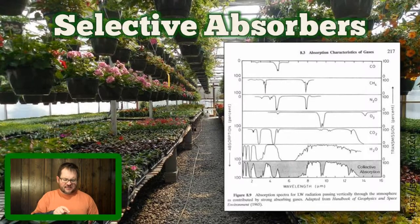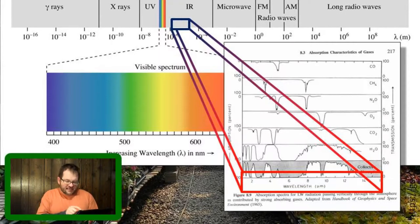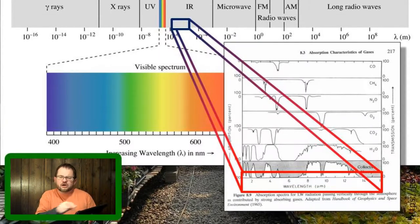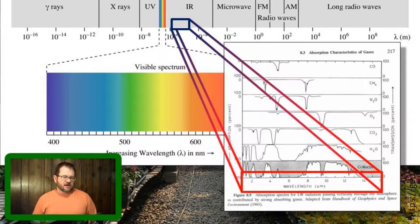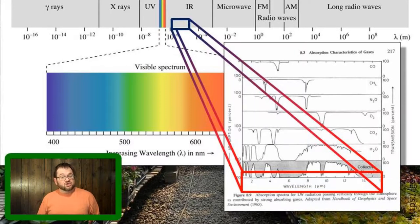This figure is pretty complicated, so let's take it apart one piece at a time. The x-axis of this diagram indicates the wavelength of radiation we're talking about — it goes from about 1 micron to about 16 microns. That's a little chunk of the electromagnetic spectrum in the range of wavelengths we call infrared radiation, which makes it a type of long-wave radiation — not a very big chunk of the total electromagnetic spectrum.